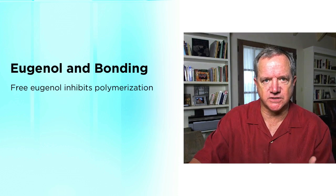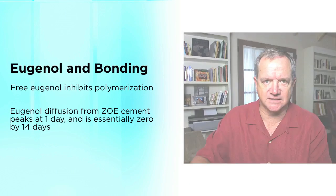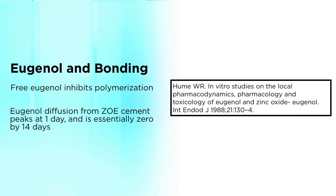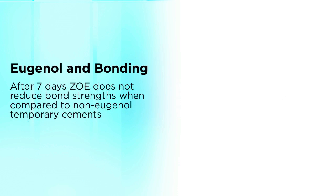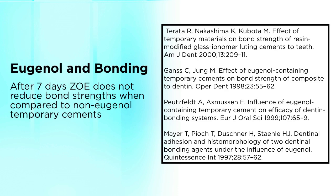Free eugenol is what inhibits polymerization of cements — it's the free eugenol itself. What we know from research is that the diffusion of eugenol from ZOE cement peaks at one day after you cement the temporaries, and it's essentially down to zero by 14 days. What that means is if your temporary is on there for 14 days, there's basically no free eugenol left. I'm providing an article as a reference for the eugenol diffusion.